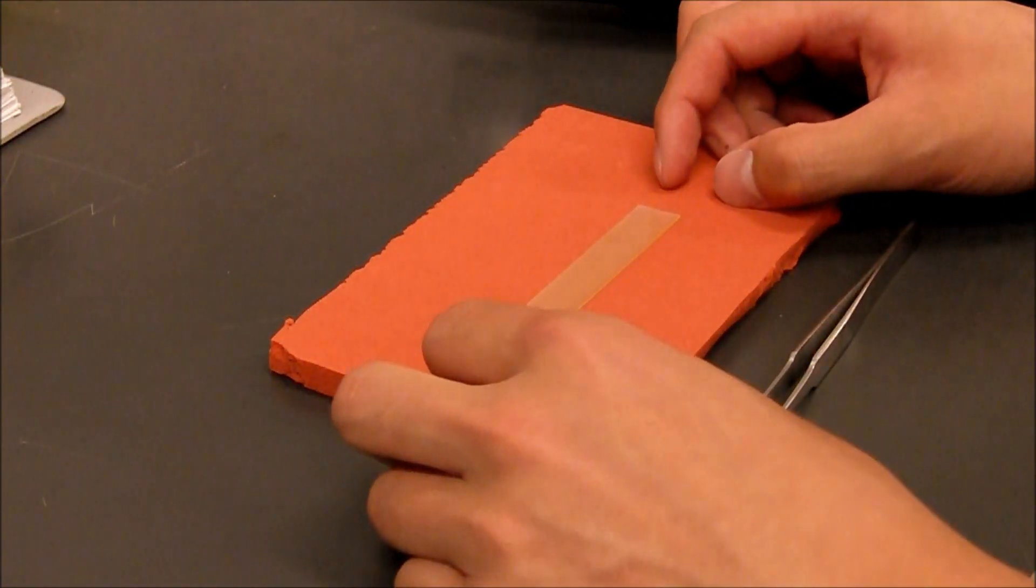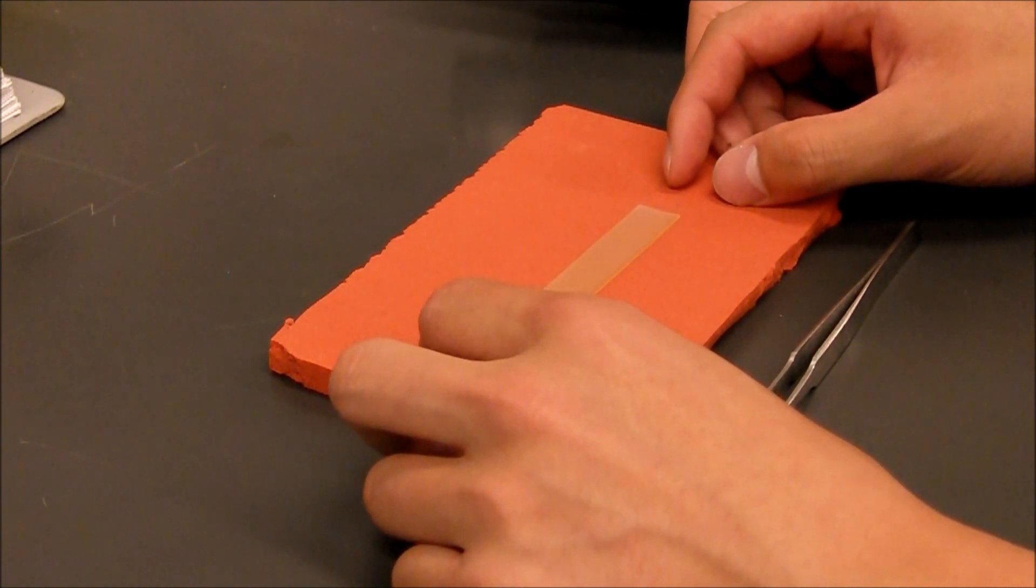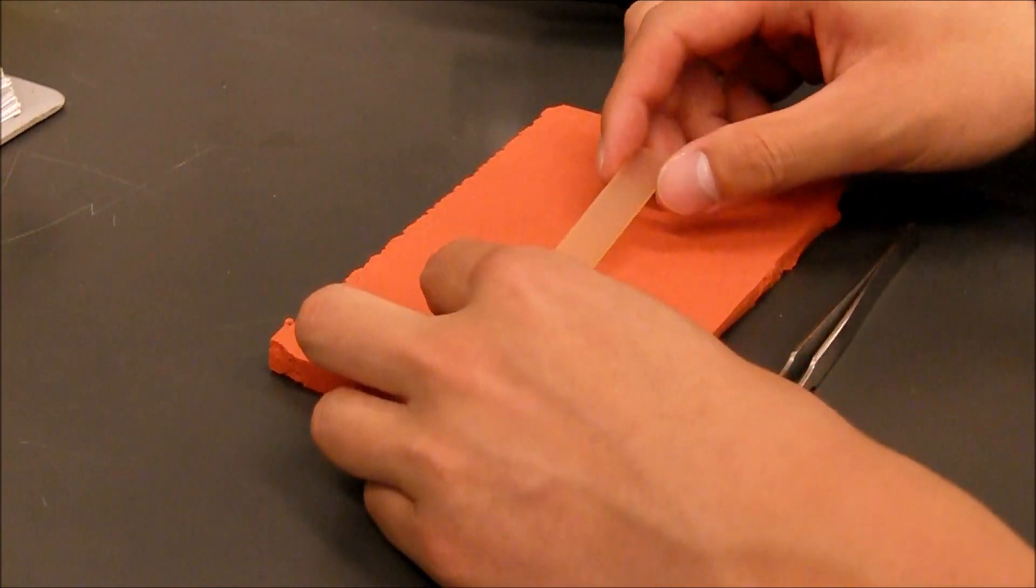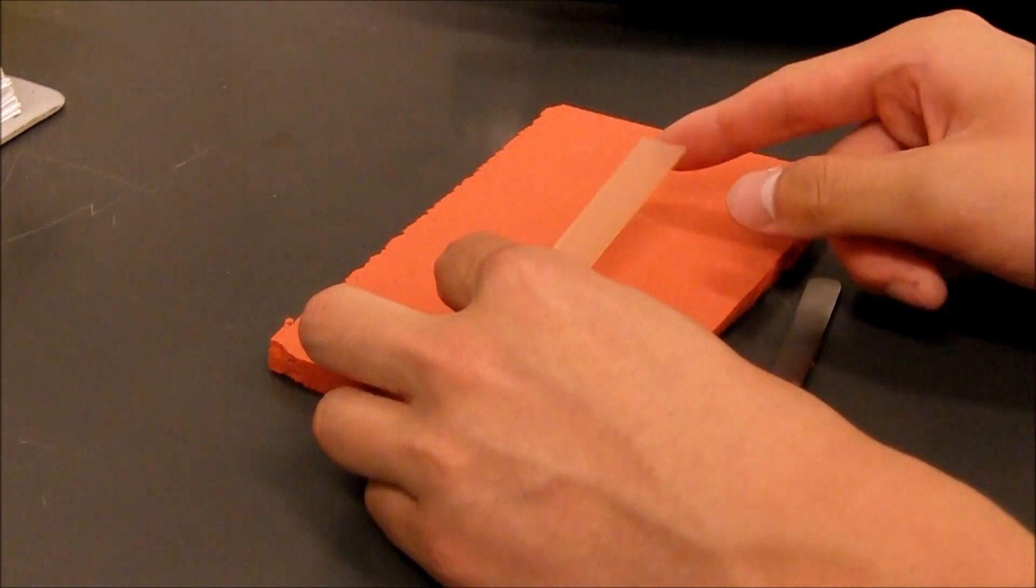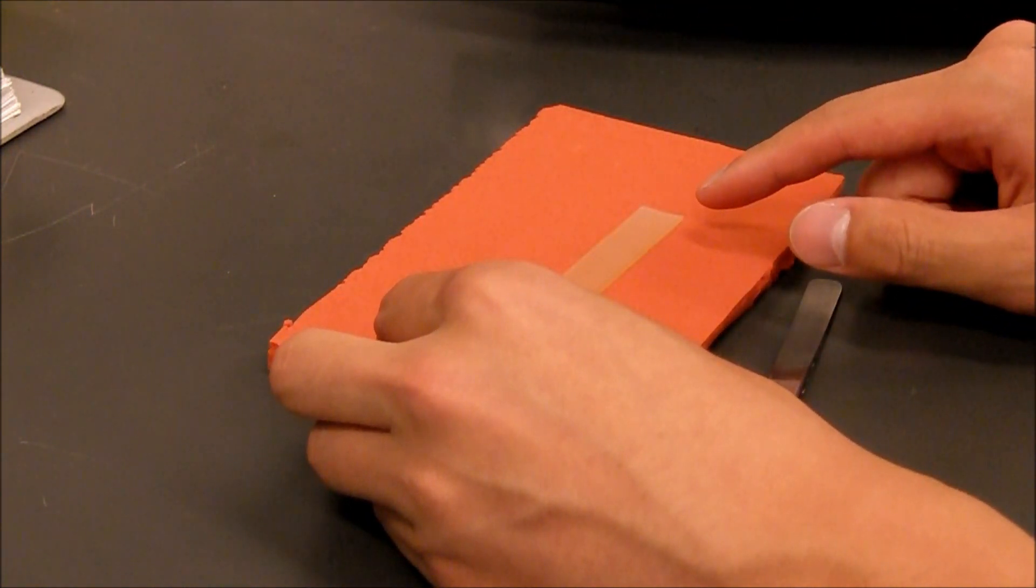Here we have a sample of a piece of shape memory polymer. Shape memory polymers look and feel just like ordinary plastic, but they can remember a certain shape. Right now this piece is pretty flat, it's pretty pristine. I can bend it, flex it, but generally it's going to maintain its shape.